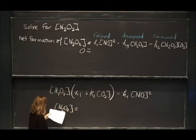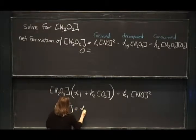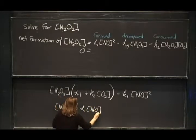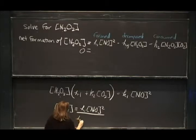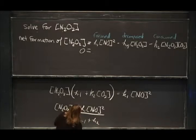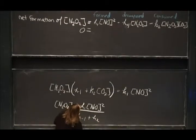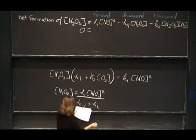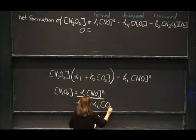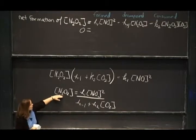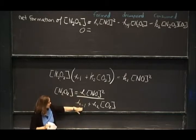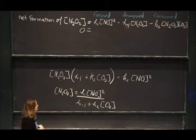So that's now going to be equal to our K1 times NO squared over K minus 1 plus K2 times the concentration of O2. So now we've just solved for N2O2, our intermediate, in terms of our rate constants and in terms of our reactants.